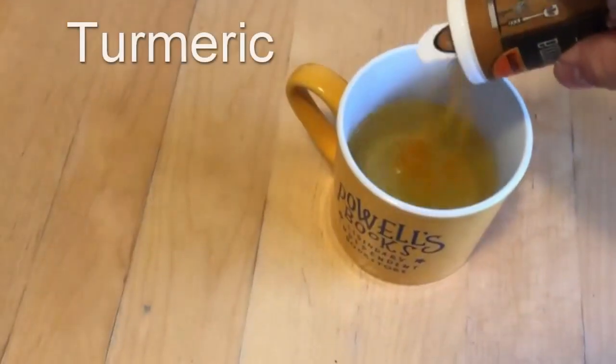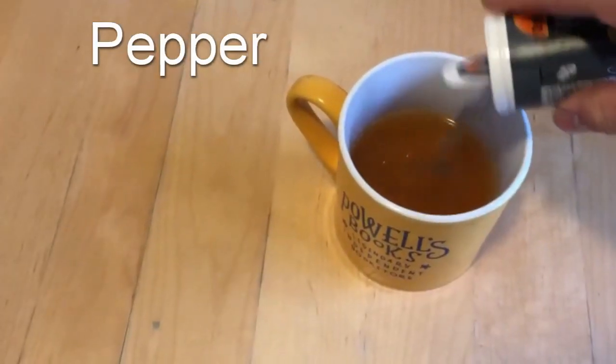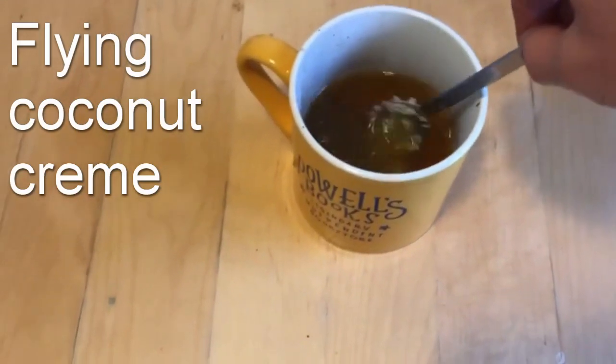To best absorb curcumin, mix it with some pepper in hot water and add some fat, because curcumin is a fat-soluble molecule.